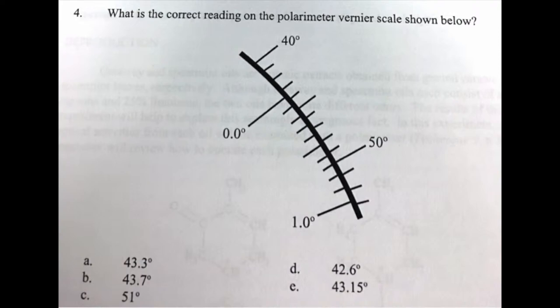What's given is the image that you would be seeing when looking into the polarimeter. The zero on the vernier scale matches up with just above 43 degrees on the outer scale, so the coarse reading would be 43.